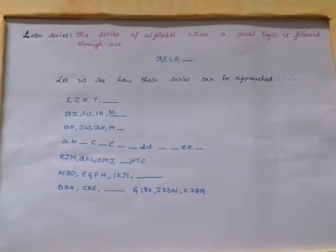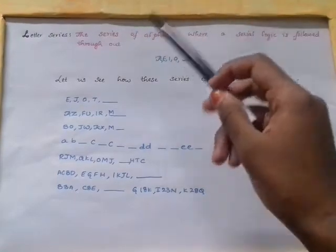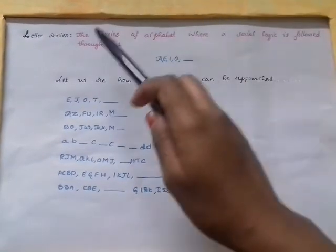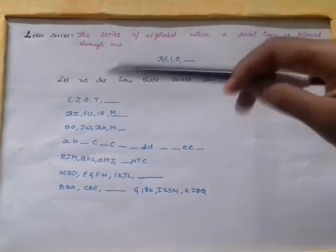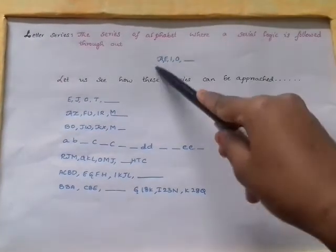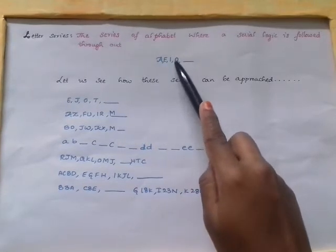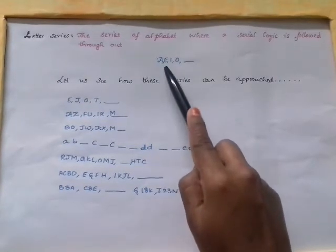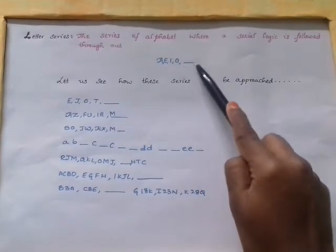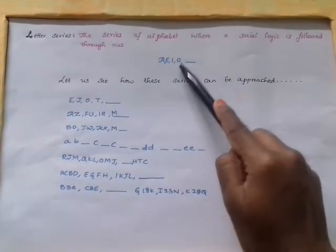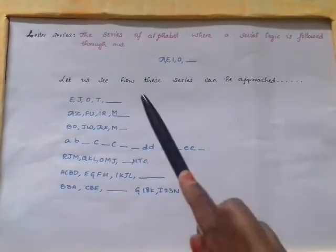Hey guys, welcome back to Hobby Corner and our new video is about letter series. Yes, letter series is the series of alphabets where the serial logic is followed throughout the series. Here we can go through a series where the first four letters are A, E, I, O. Then the next letter could be guessed as U because there are series of vowels. Let us see how these series can be approached.